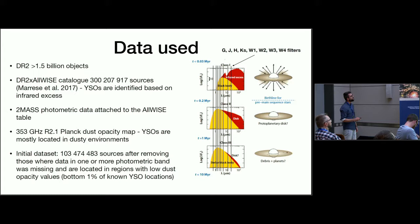These are plotted here so now you have the idea that in the very beginning for class one YSOs, you really see at the long wavelengths that there is some infrared excess which shrinks as the star evolves onto the main sequence. When we have just a debris disk and the planets, this infrared excess is very small. Also we know that YSOs are mostly located in dusty environments, in interstellar clouds. For the classification we use the Planck dust opacity map.